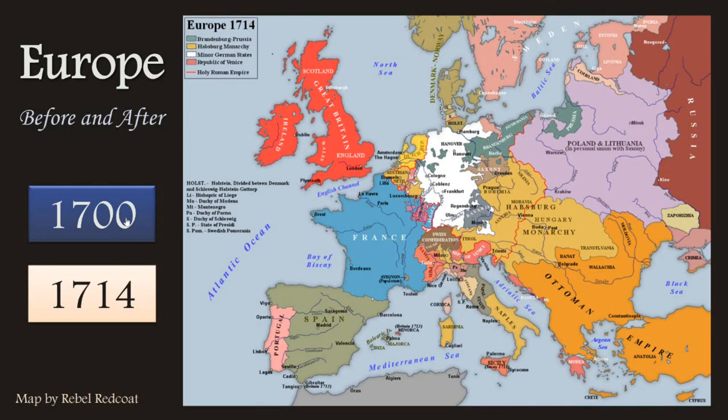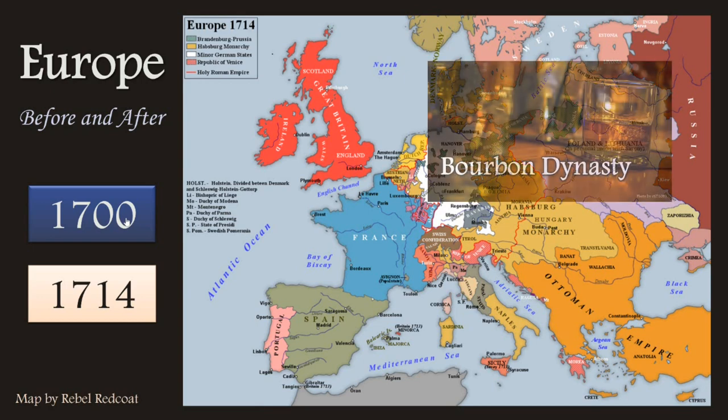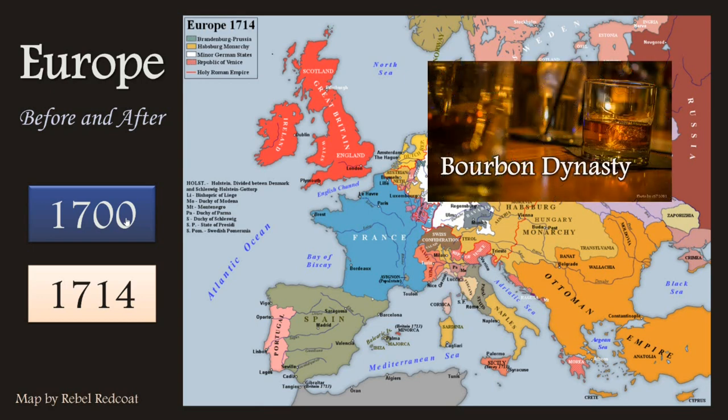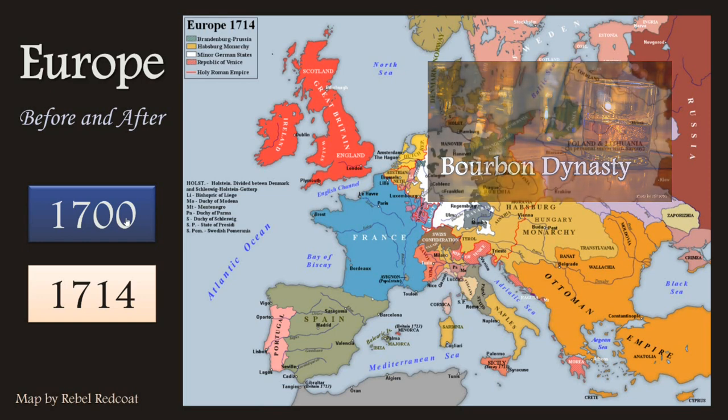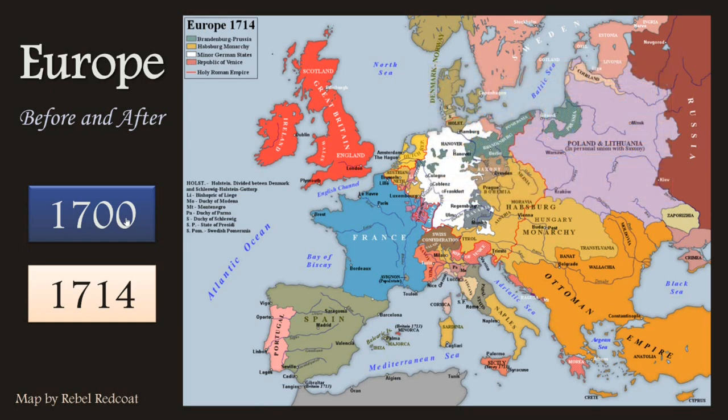Britain would become the great maritime power of the 18th and 19th centuries — partly due to the decline of the Dutch Republic, but also because the British were very forward-thinking about naval supremacy. Here is Europe in 1714: the Act of Union created one country of England, Scotland, and Ireland; Spain is governed by a Bourbon monarch; and France is still governed by Louis's Bourbon dynasty with no territorial change from when the war started.